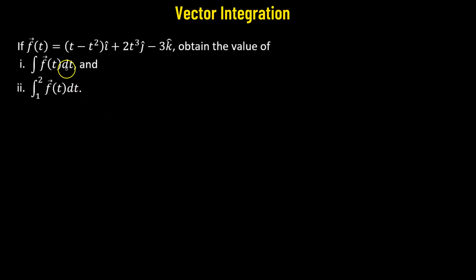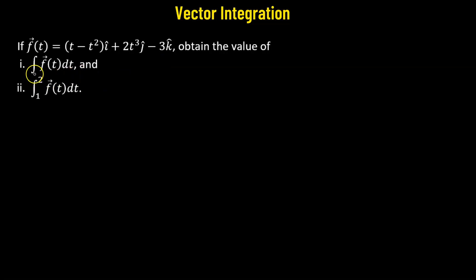We have a vector-valued function f, which is a function of the parameter t, given by (t minus t squared) i-cap plus 2t cubed j-cap minus 3k-cap. Using this, we have to obtain the value of two integrals: Part 1 is the indefinite integral without limits, and Part 2 is the definite integral with limits. Let's begin with Part 1.